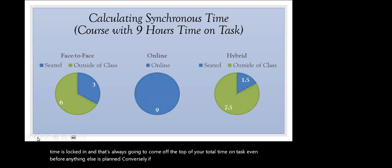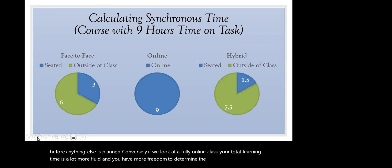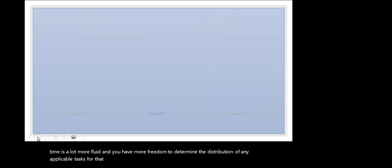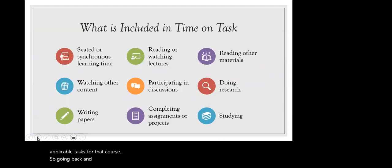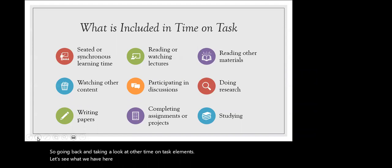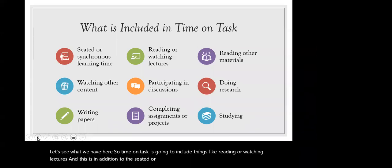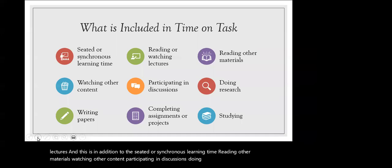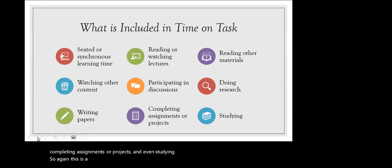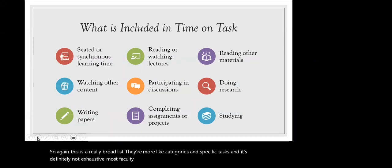Conversely, if we look at a fully online class, your total learning time is a lot more fluid and you have more freedom to determine the distribution of any applicable tasks. Time on task is going to include things like reading or watching lectures — in addition to the seated or synchronous learning time — reading other materials, watching other content, participating in discussions, doing research, writing papers, completing assignments or projects, and even studying. This is a really broad list — more like categories than specific tasks — and it's definitely not exhaustive.